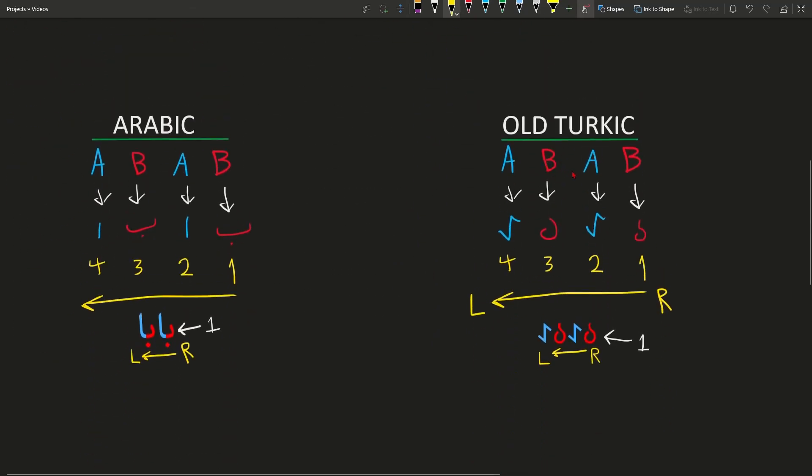So, in Old Turkic, we have the first letter, again, being this B, then A, B again, and then A. One, two, three, four. I hope this is quite intuitive.